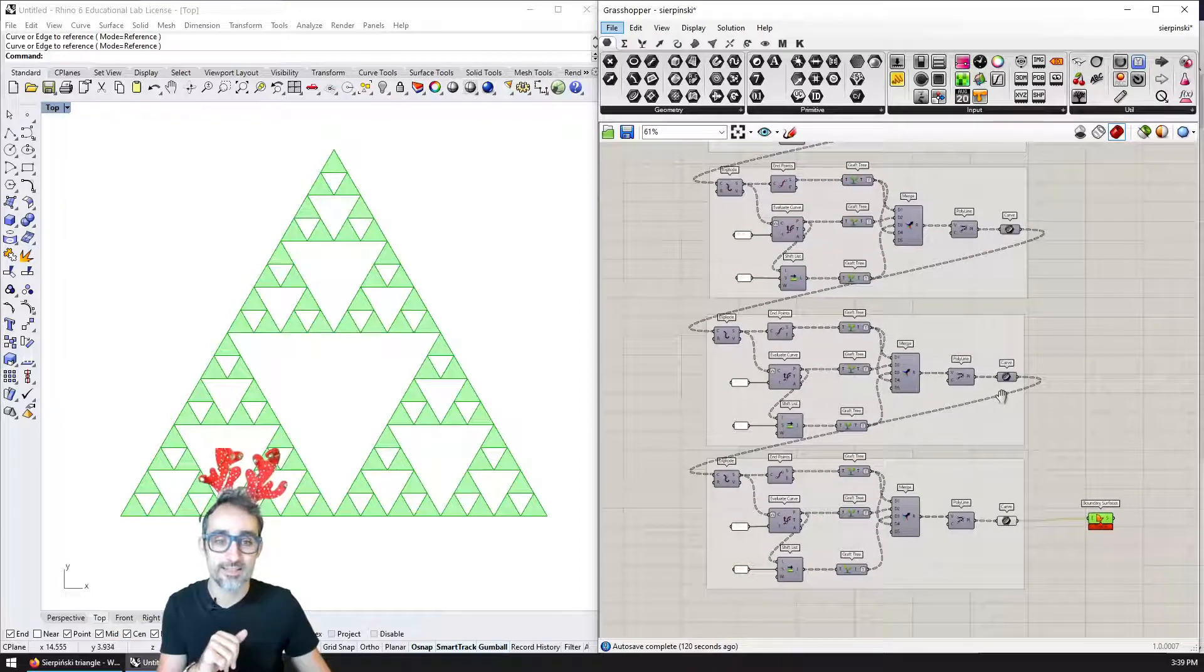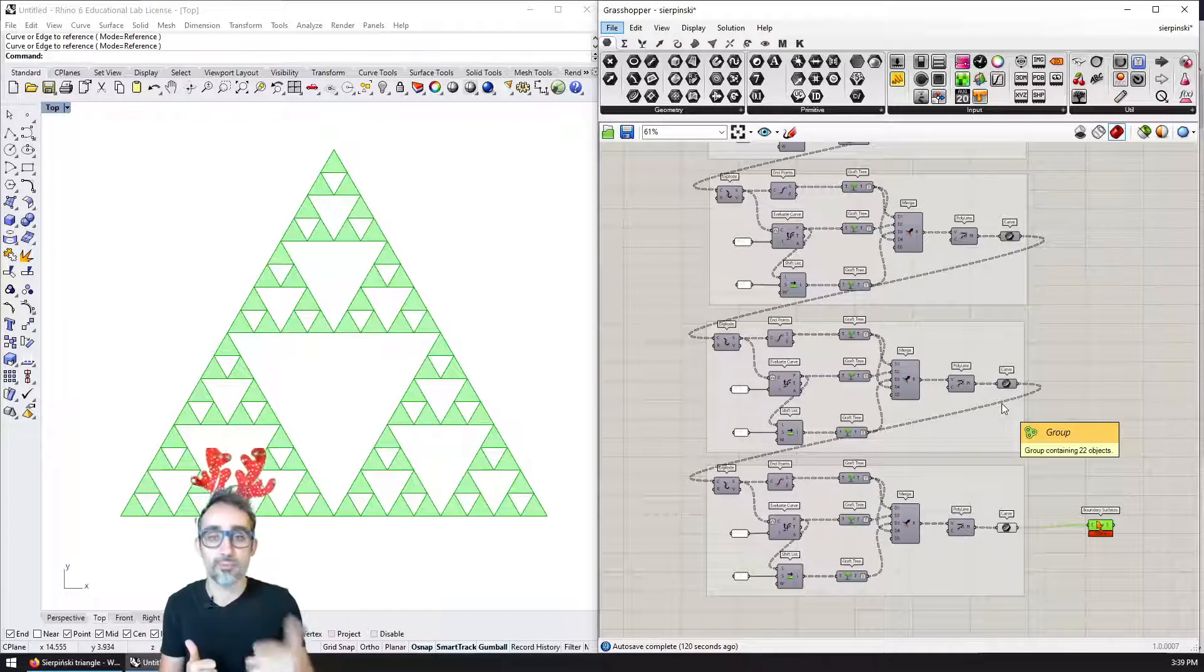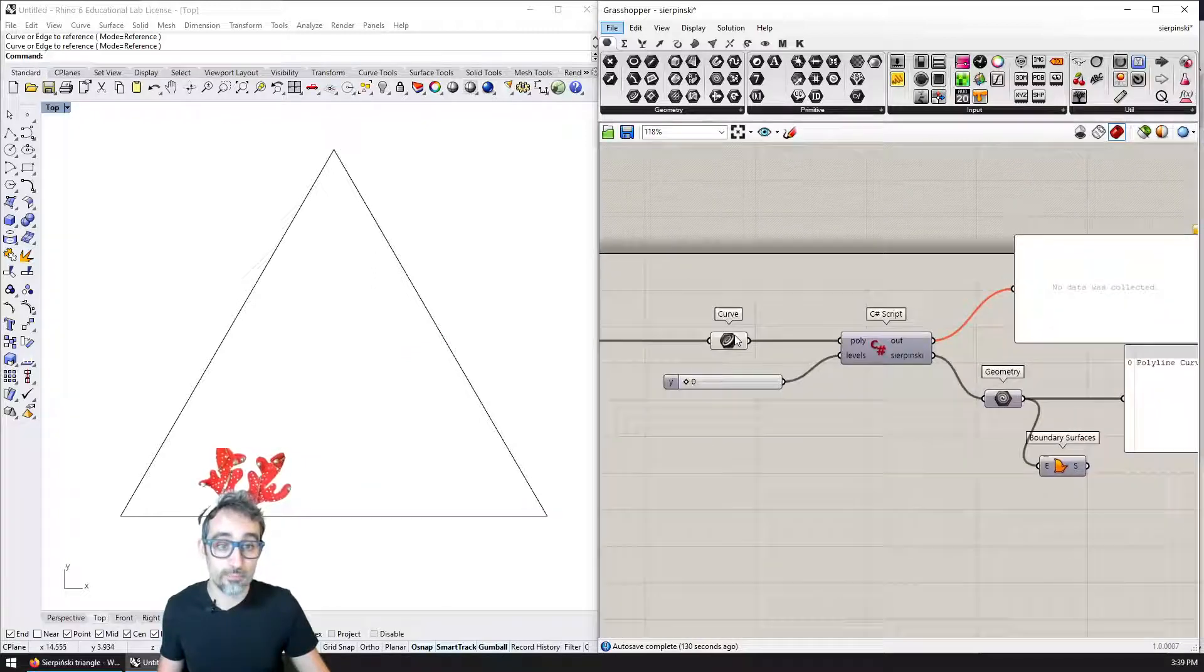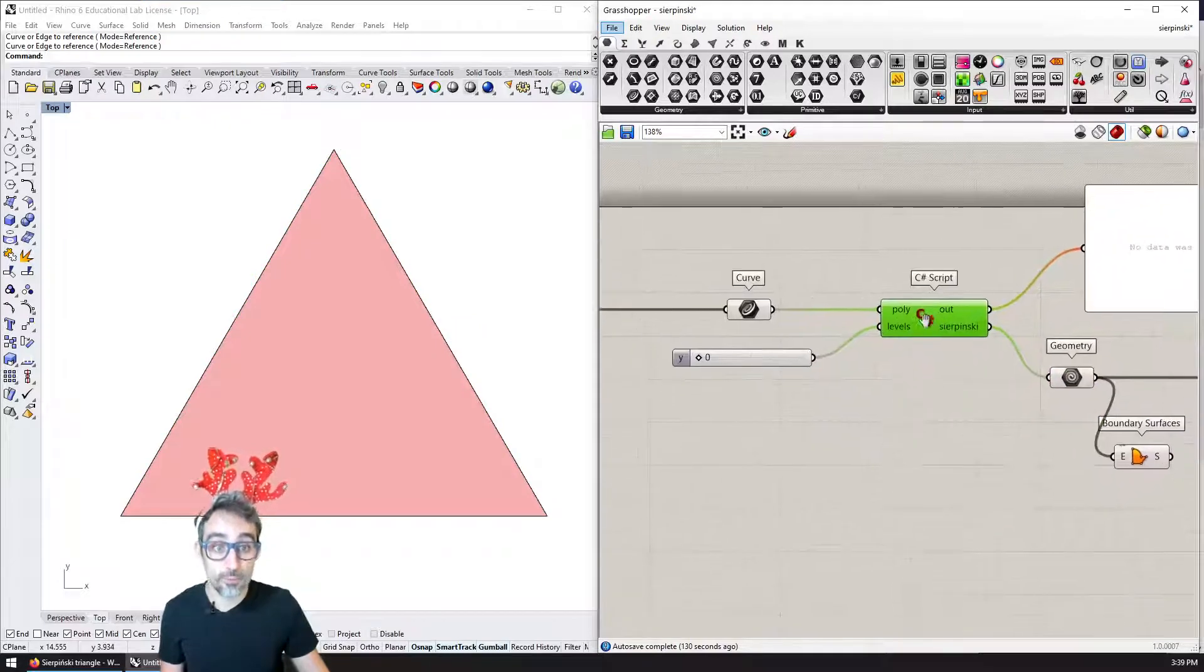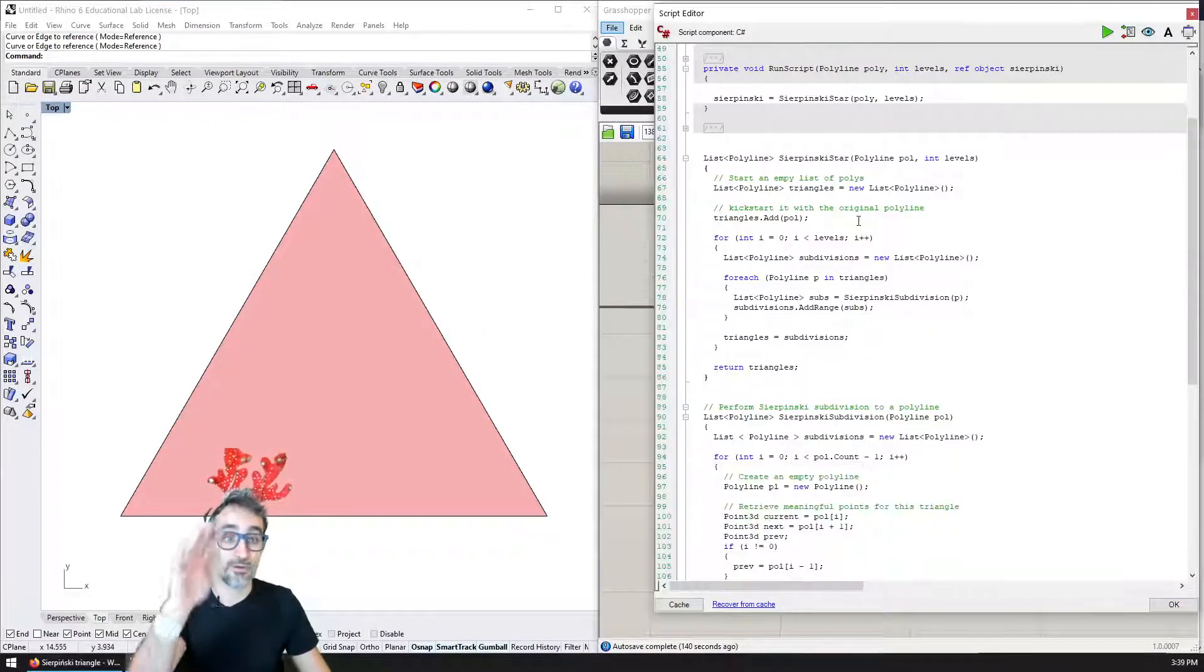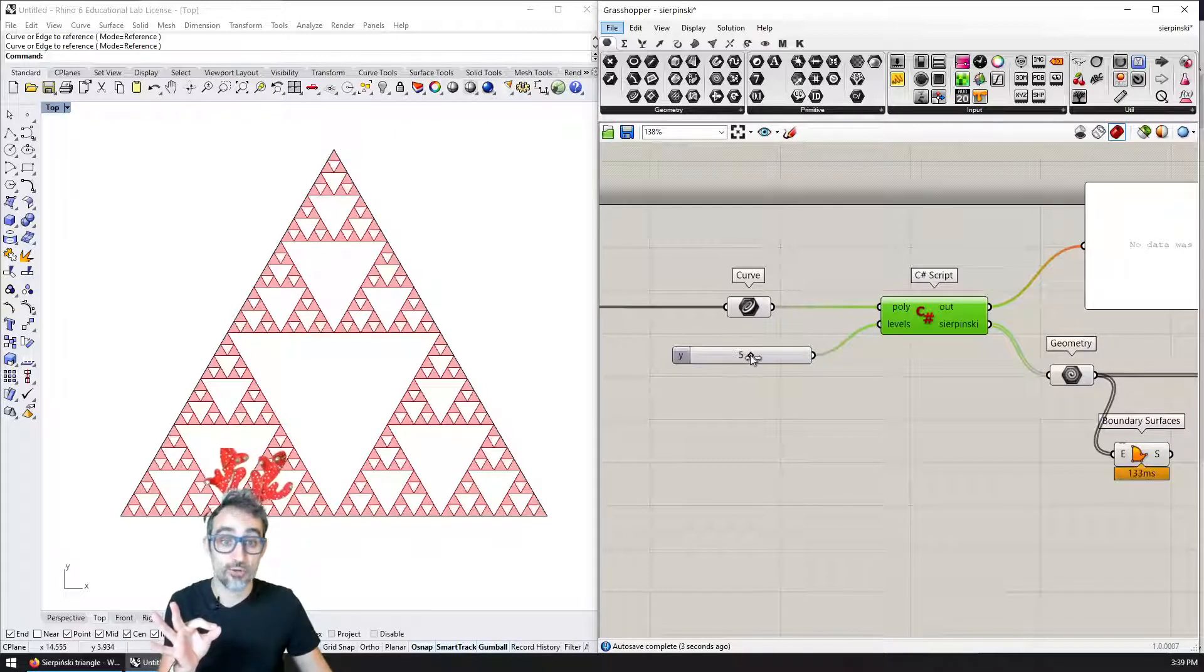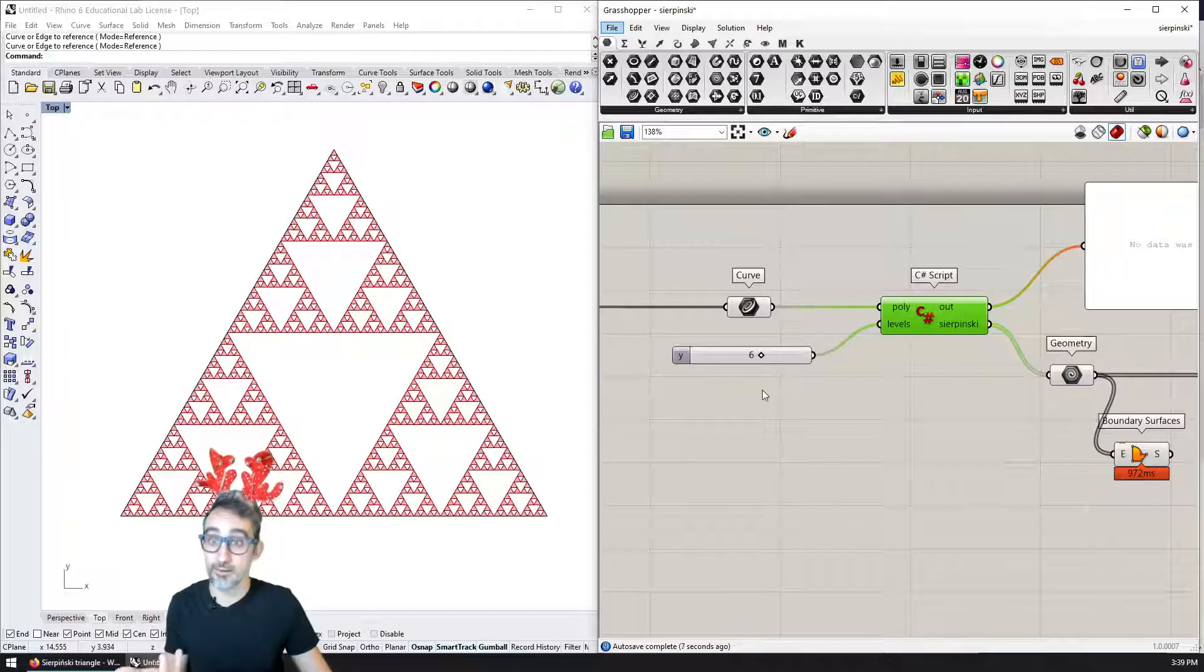But the problem with Grasshopper is that it doesn't embed natively without plugins a way to make recursion. So I'm also going to teach you in the third part how to implement that recursion in a native way in Grasshopper by programming the same algorithm using C sharp scripting. We're going to write some code to perform that recursive subdivision so that we can programmatically with a slider control how many subdivisions we apply to the Sierpinski tree.